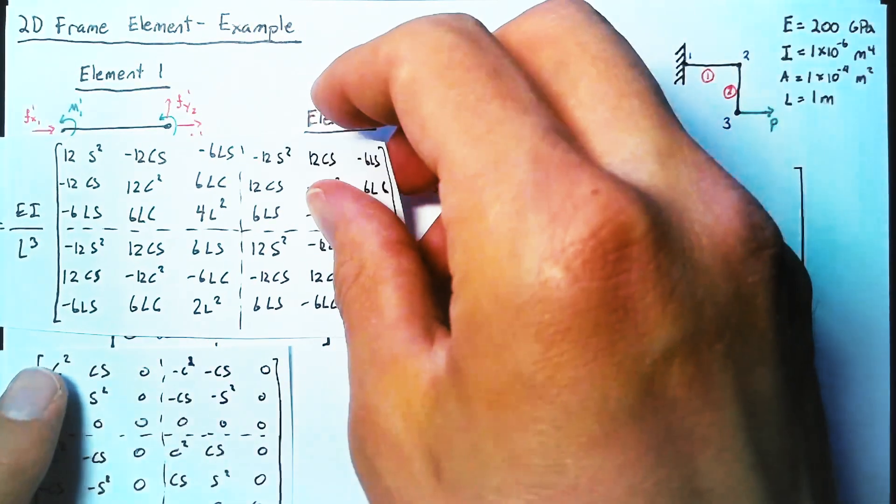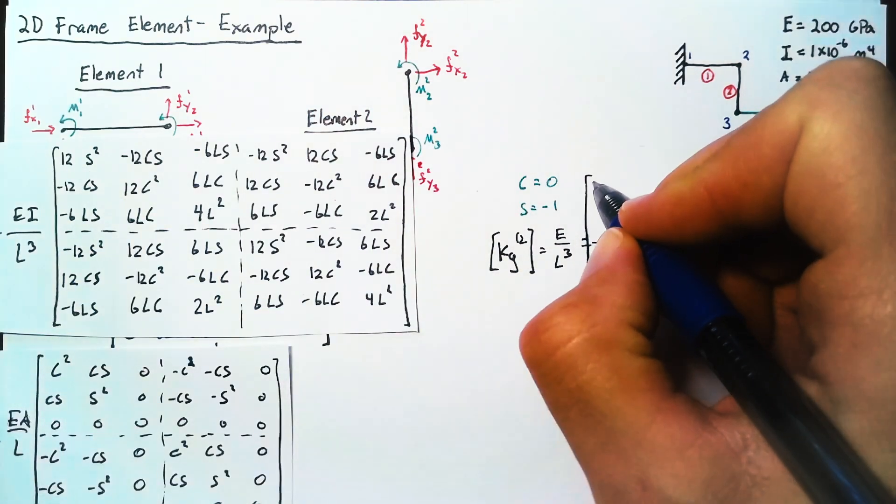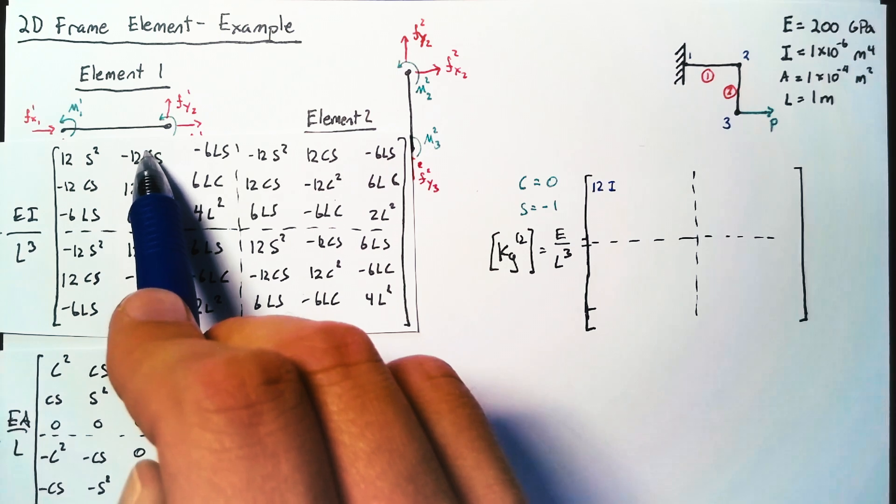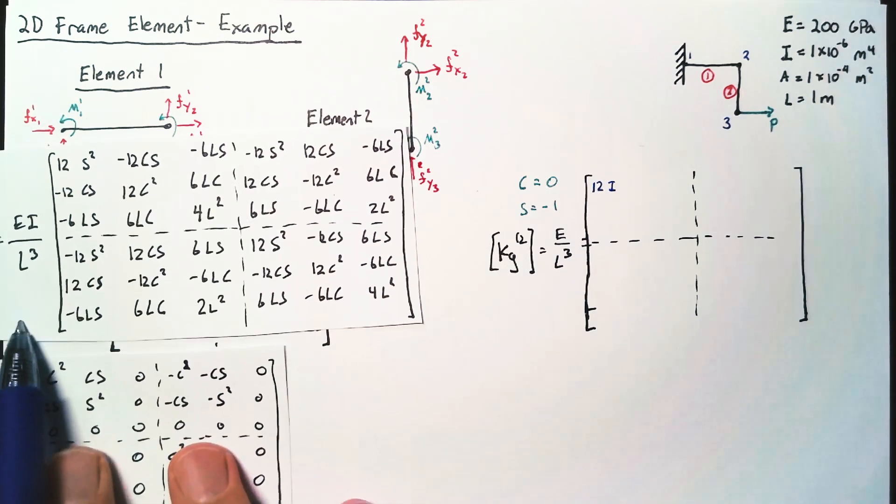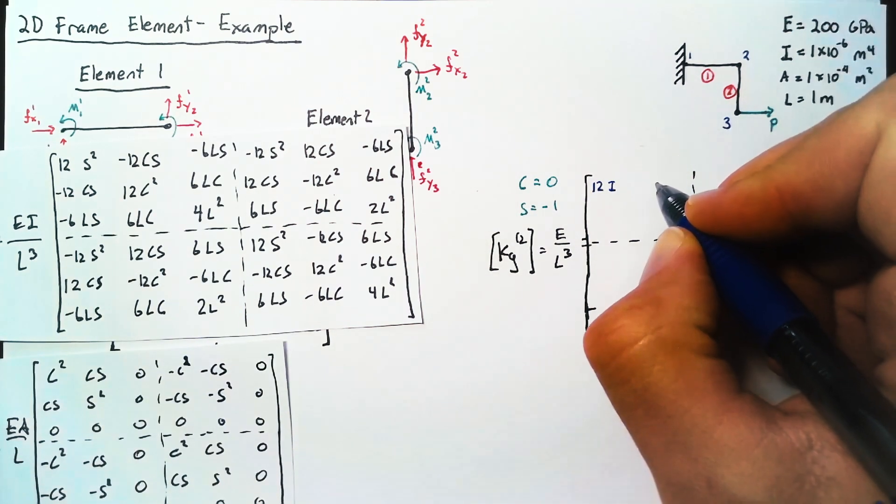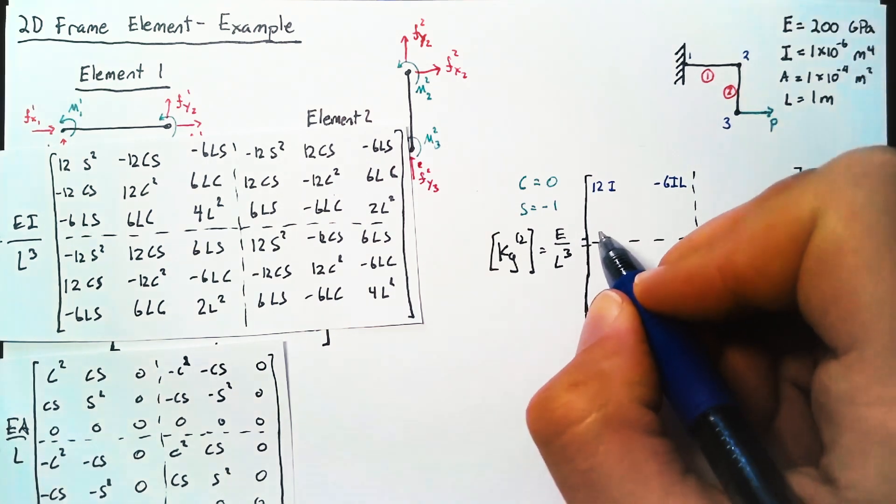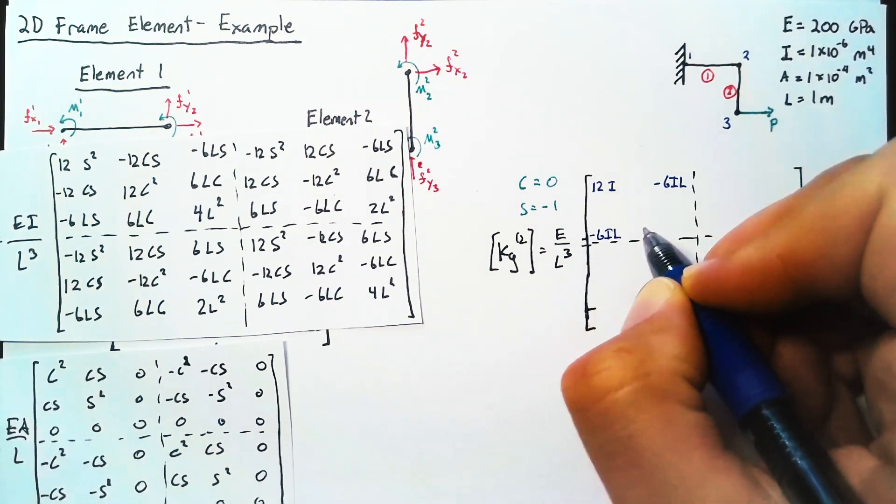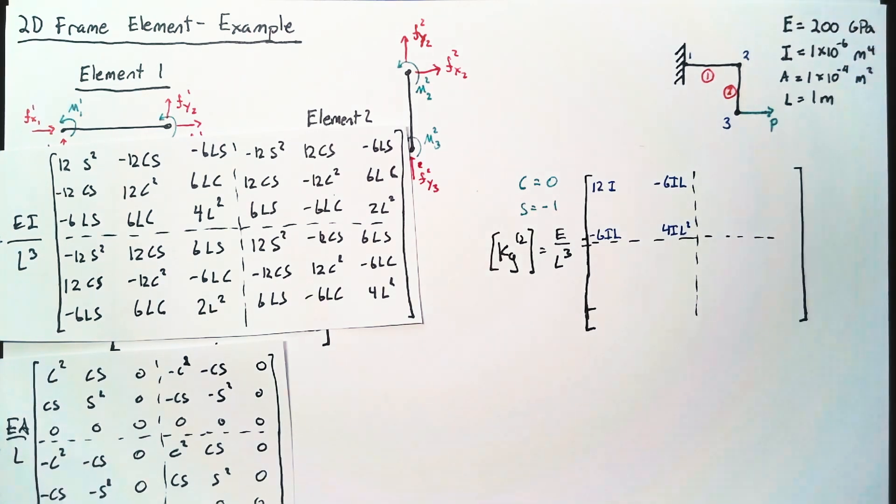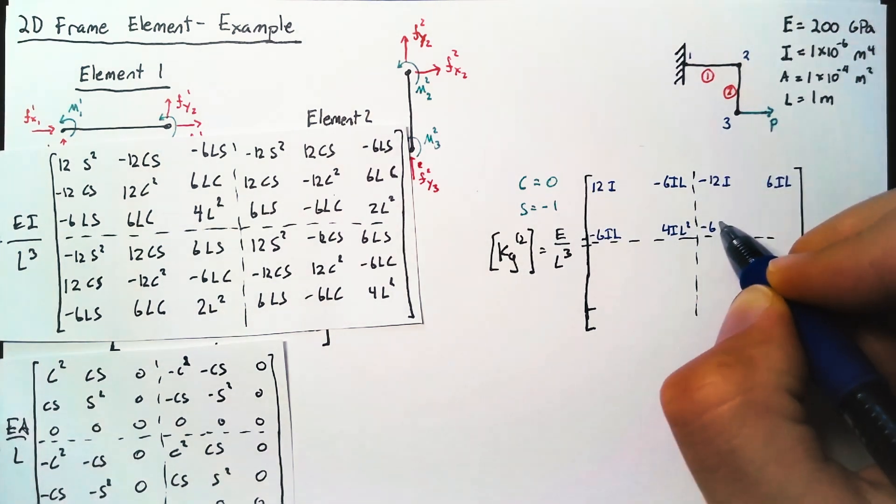So in this case, for our beam, we're going to end up with a 12I in the 1,1 spot. And then the cosines happen in a bit of a cross pattern, and so we can ignore all those. And so just the corners are going to have values. So this will be negative 6IL in the 1,3 spots, negative 6IL in the 3,1 spots, and then 4IL squared in the 3,3 spot. And we can continue that pattern throughout the rest of the submatrices.